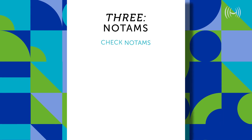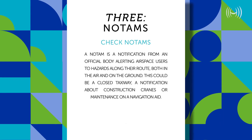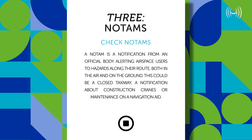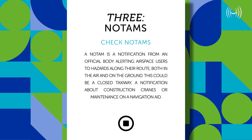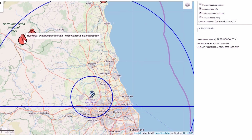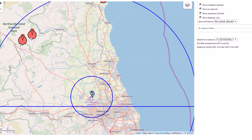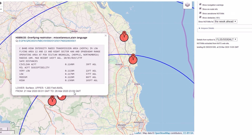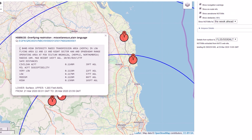Number three: checking the NOTAMs. NOTAMs can be really confusing at first, but once you get a grasp of them they're really easy to use. They are basically notices about changes in the aerospace. I'm going to give you a couple of links in the description below to help explain NOTAMs and will also make a video on them in the future. You can look on the NOTAMs website or the NOTAMs app — they're both really useful.